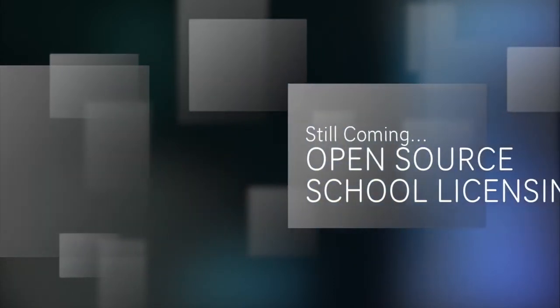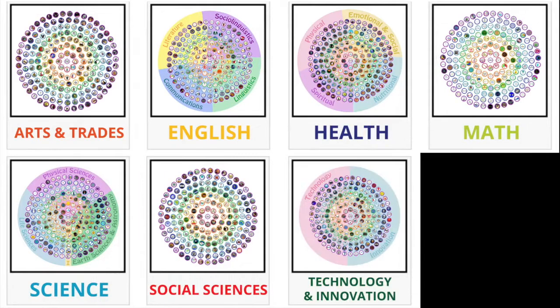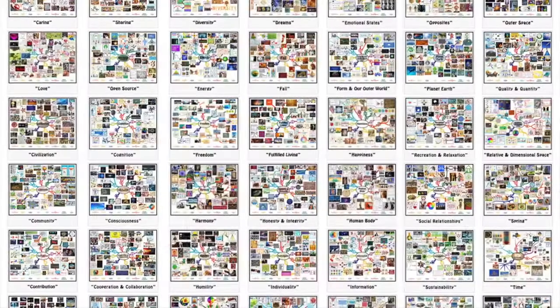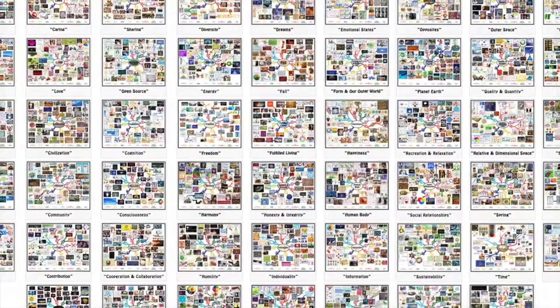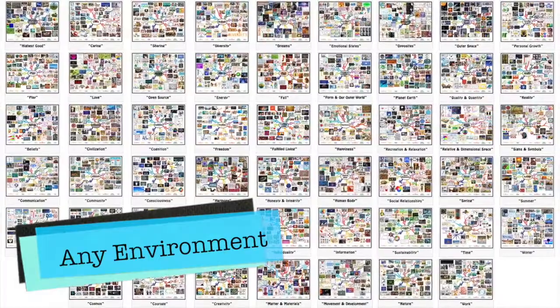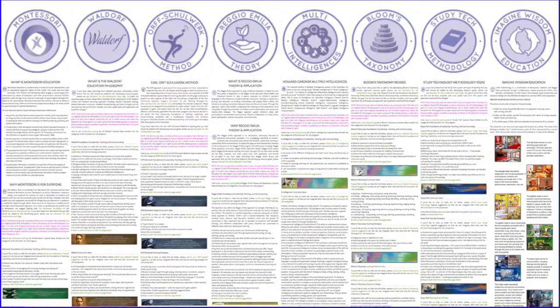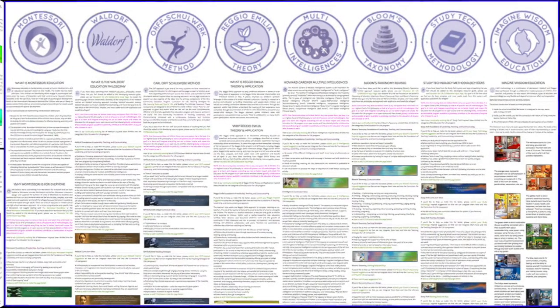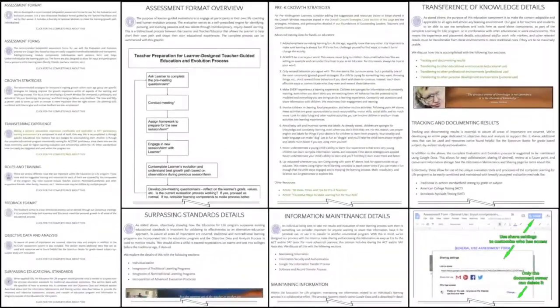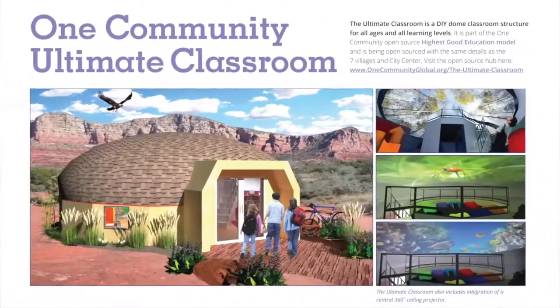Completed sections include comprehensive subject outlines covering arts and trades, English, health, math, science, social sciences, technology and innovation, and values. Also 52 weekly themed lesson plans covering all subjects, all learning levels and ages, usable in any learning environment. 12 detailed and progressive curriculum outlines are complete, including summaries and integration of all the best-known alternative education programs including Montessori, Waldorf, and more — plus leadership skills, collaborative assessment formats, a global online free education resource hub, classroom design, and more.